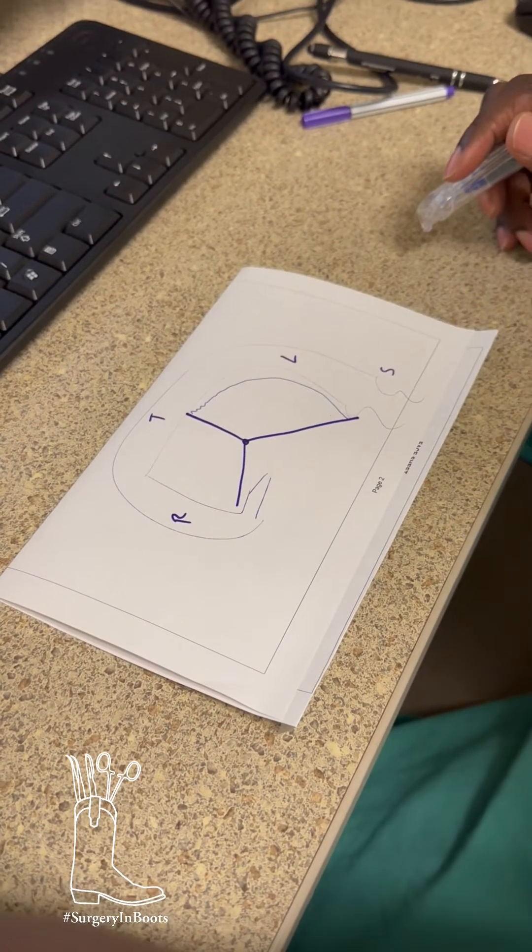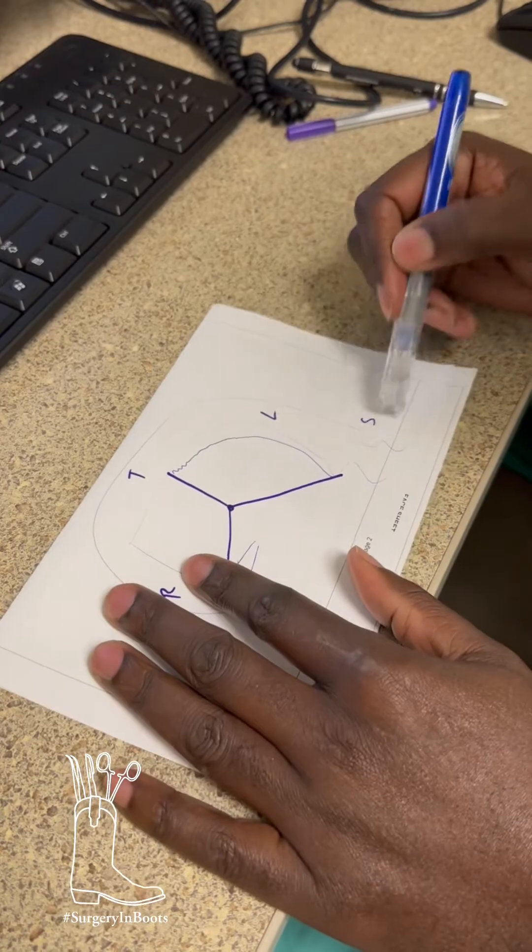All right, so your question is, why are we doing a left colon and a sigmoid and not by itself?